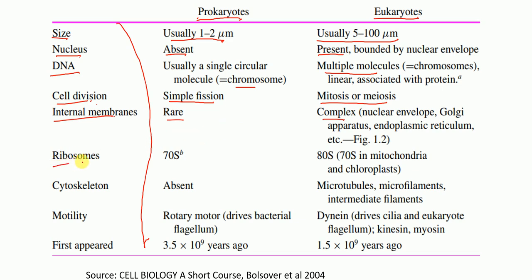Ribosomes. In prokaryotes, the type of ribosome is 70S ribosome, as refers to sedimentation rate. Whereas in eukaryotes, 80S, and also 70S in mitochondria and chloroplast.